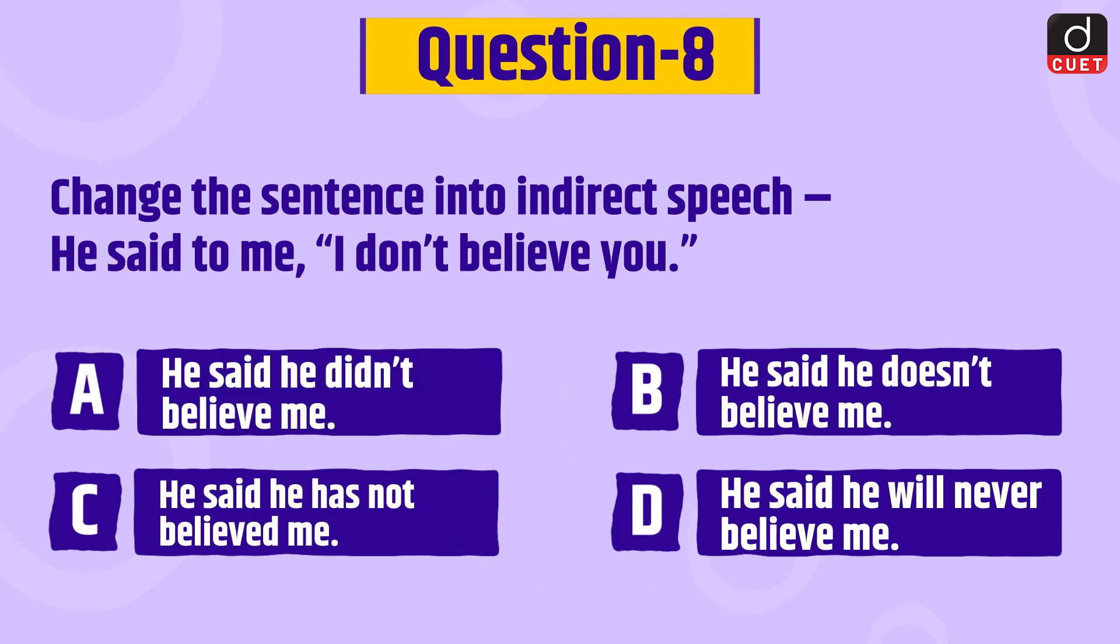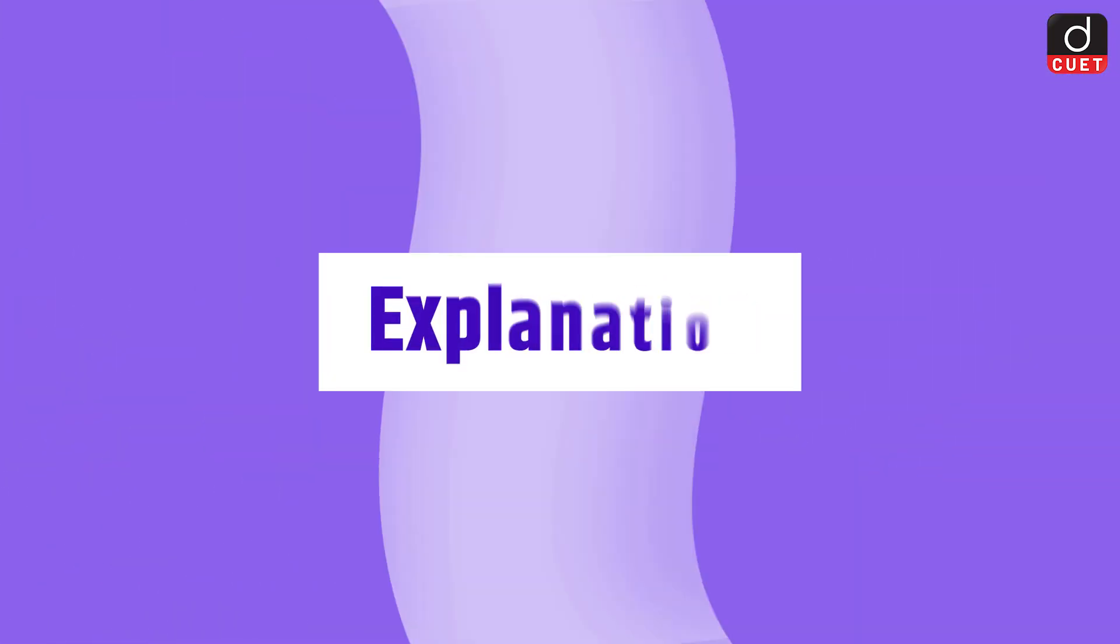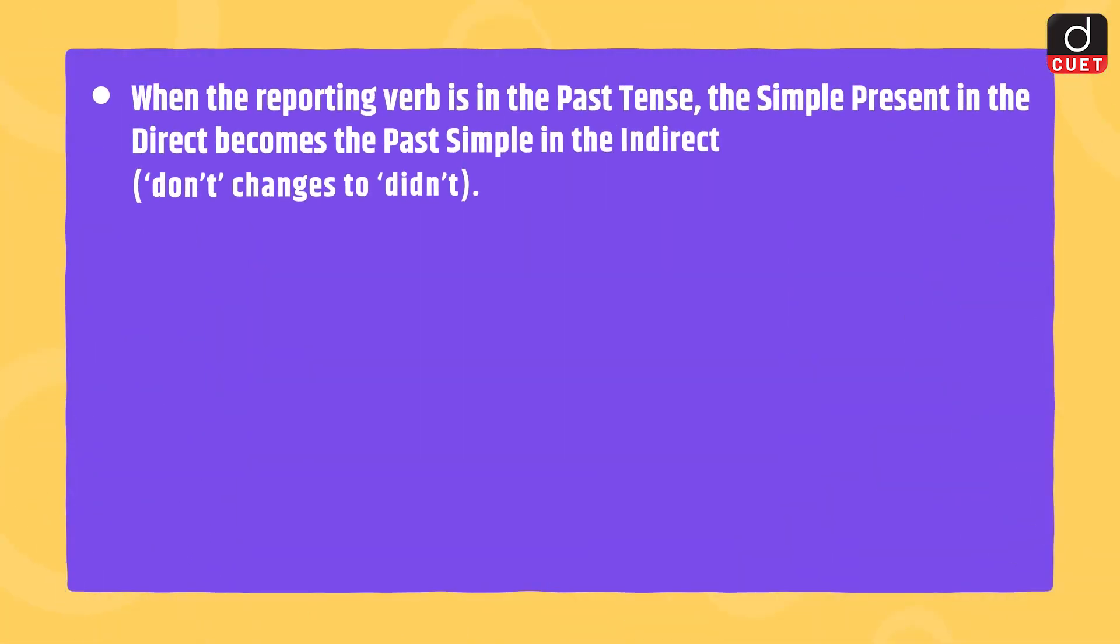The correct answer is option A. He said he didn't believe me. When the reporting verb is in the past tense, the simple present in the direct becomes the past simple in the indirect. Don't changes to didn't.